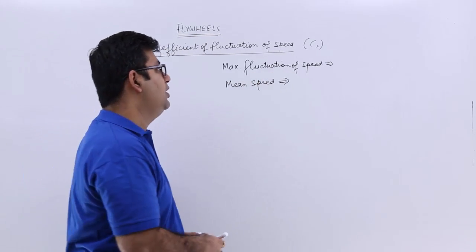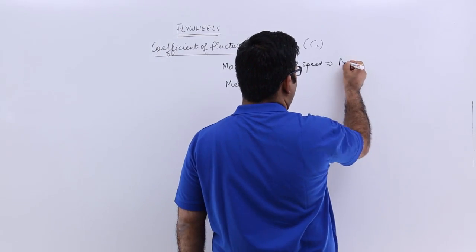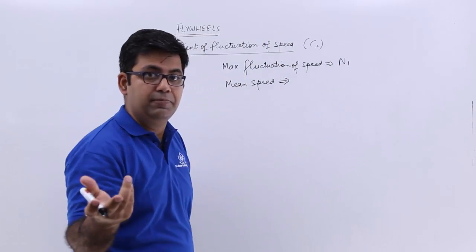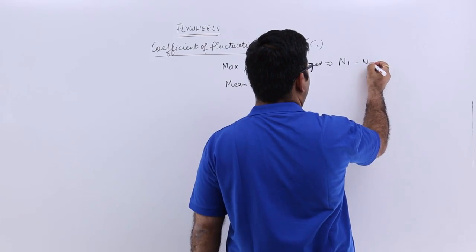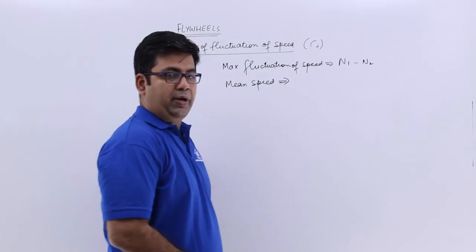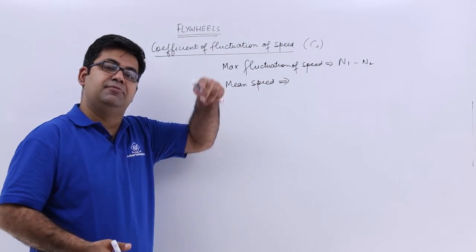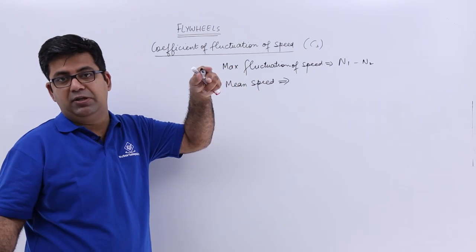That is the difference between the maximum rpm, let's say that is n1, and the minimum rpm, that is n2. So your flywheel has a maximum range of n1 rpm and a minimum range of n2 rpm.